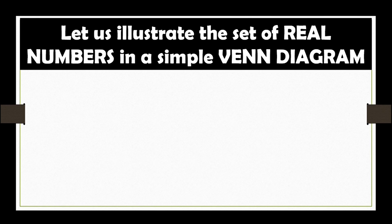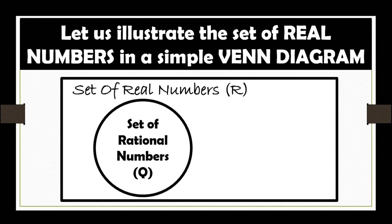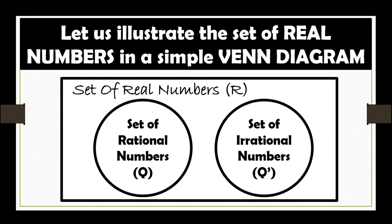To start with, let us illustrate the set of real numbers in a simple Venn diagram. In our Venn diagram, we will start with a rectangle that represents the universal set, set of real numbers R. Then, circles representing set of rational numbers and set of irrational numbers.